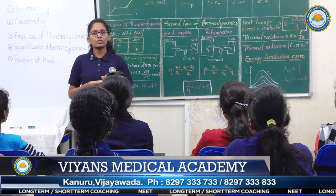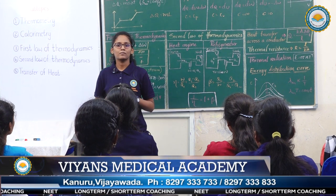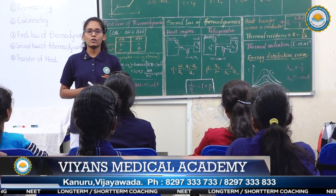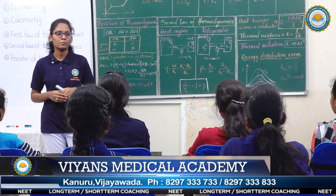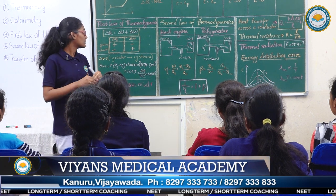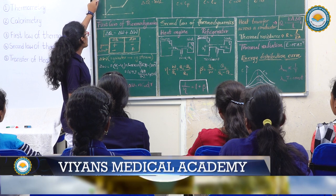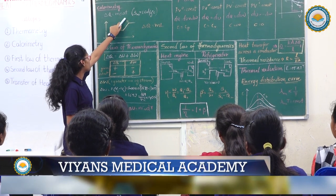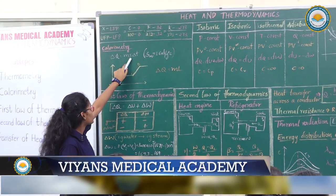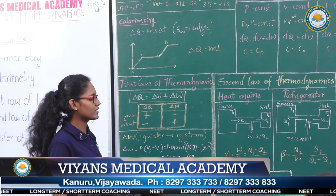Let us move on to our next topic, Calorimetry. What is calorimetry? The measurement of heat is calorimetry. Heat is a form of energy that flows from one body to another body by virtue of temperature difference. This can be expressed as delta Q equals M times S times delta T. Here, M is the mass of the substance, S is the specific heat of the substance, and delta T is the temperature difference.